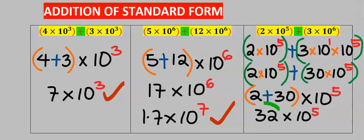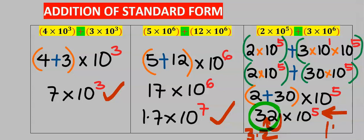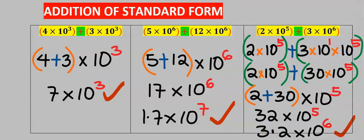Next, 32 is greater than 10, so you move the decimal to have 3.2. Because of this movement, the power increases from 5 to 10 to the power of 6, and this becomes our answer.